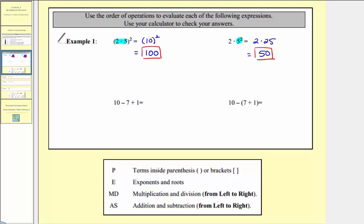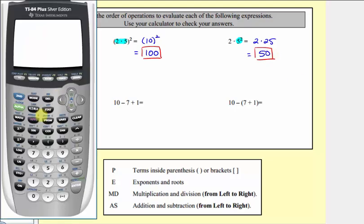Let's check these first two on the calculator. First we have in parentheses two times five, and this is squared, which does equal one hundred. For the second expression we have two times five squared, which does equal fifty.